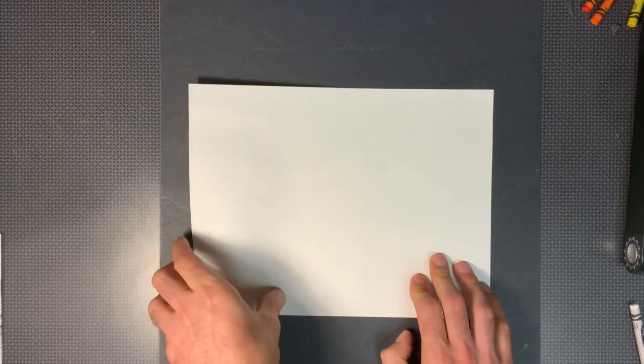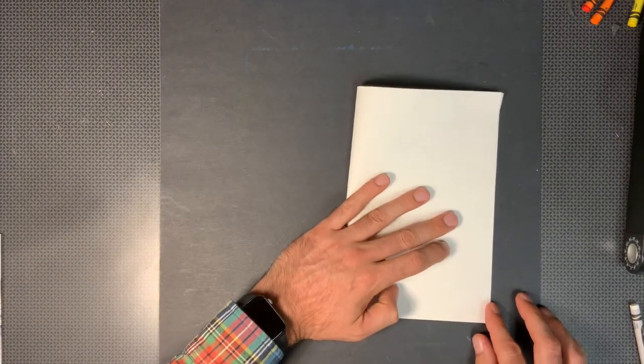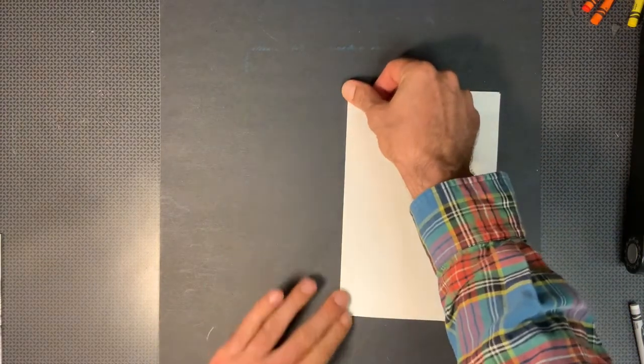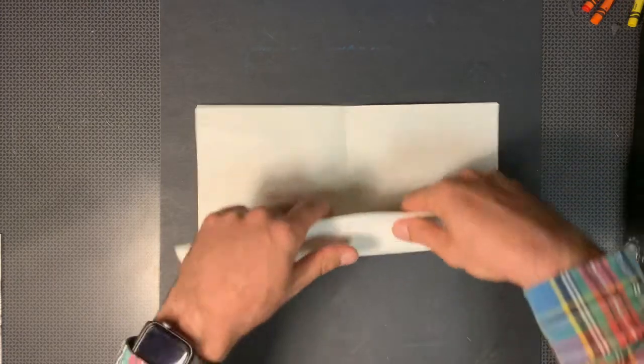For this, our web will be our radial symmetry. So to begin we're going to fold our paper in half. Then we will open it back up and fold it in the other direction.